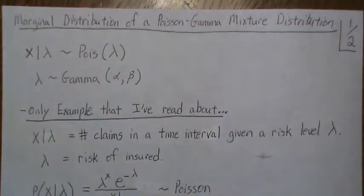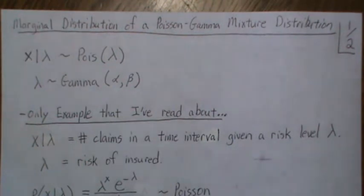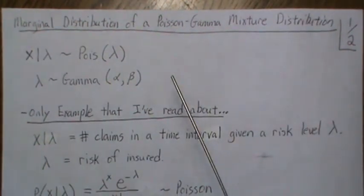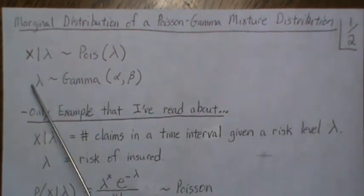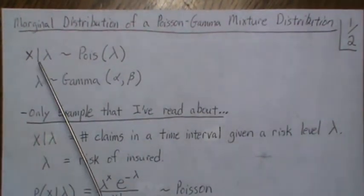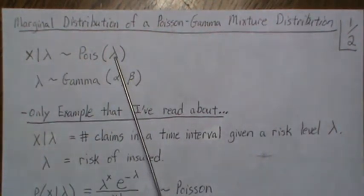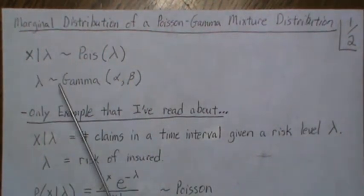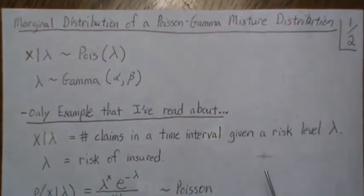Hello, in this video we're going to find the marginal distribution of a Poisson-Gamma mixture distribution. Let's develop it first and then we'll get into the nitty-gritty. Here we're going to let X given lambda be a Poisson with parameter lambda, and we're going to let lambda be distributed with a gamma distribution of alpha and beta.